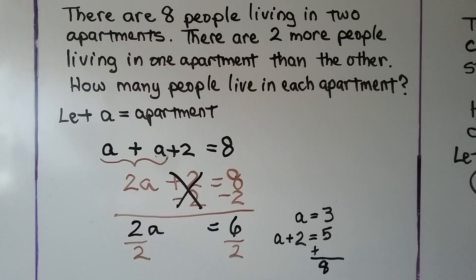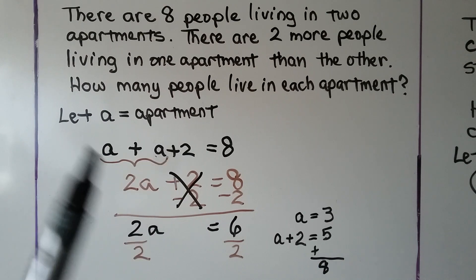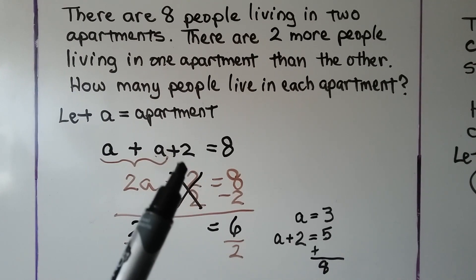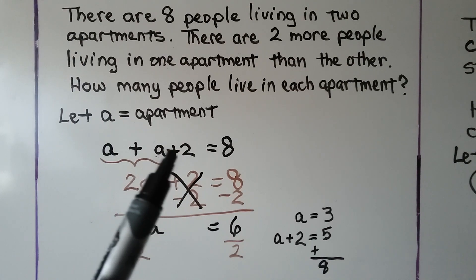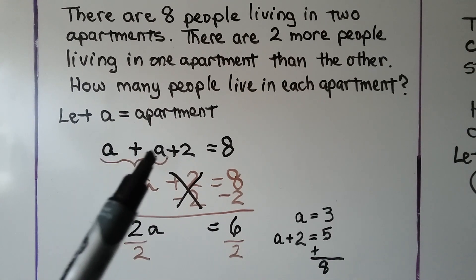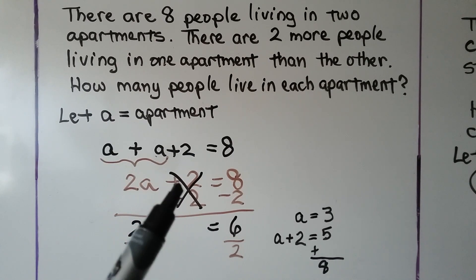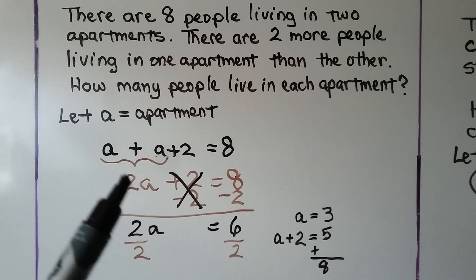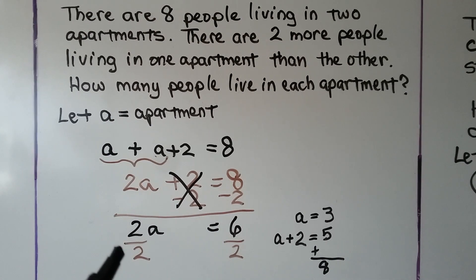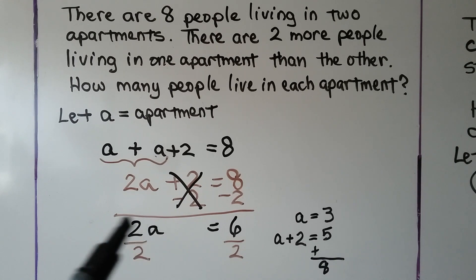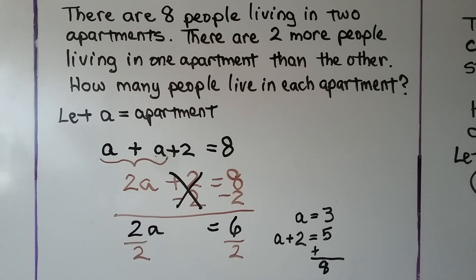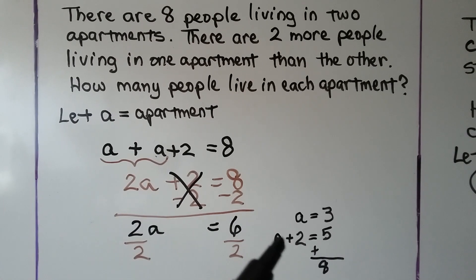So when you have problems like this, the key is to use the same variable and add the amount — like two more people — so that would be the same variable but plus two. Then combine those variables like two a, then use an inverse operation to isolate the variable. If you've got multiplication like two times some number a, use division to isolate the variable to one side. Then you know what a is, and you can figure out what a plus two is. I hope this was helpful and answered your questions. I'll see you next time. Bye.